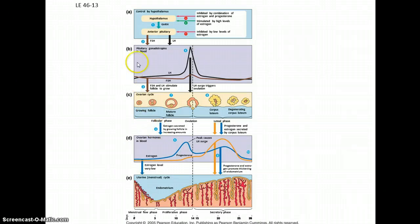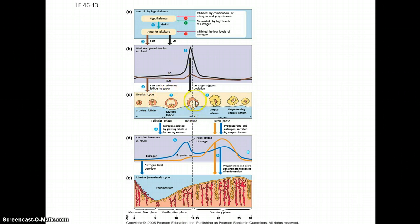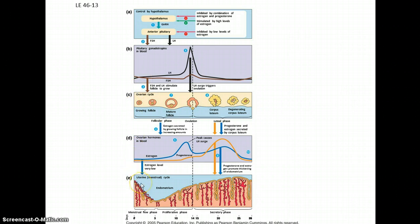In the female cycle, the hypothalamus releases gonadotropin-releasing hormone, stimulating the pituitary to release follicle-stimulating hormone (FSH) and luteinizing hormone (LH), which get the cycle started and begin follicle development. When LH and FSH are relatively low, the uterine lining is being sloughed off — this is when a woman is having her period. Then those levels begin to increase, causing a rise in estrogen levels, which stimulates the buildup of the endometrium.